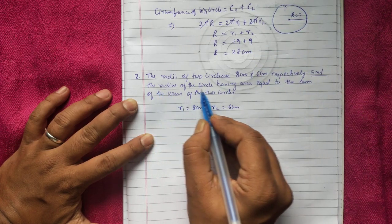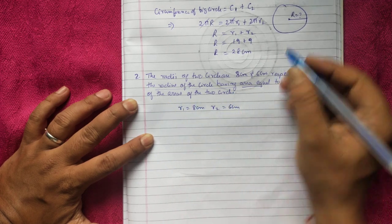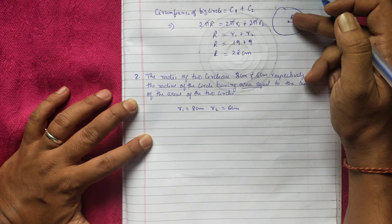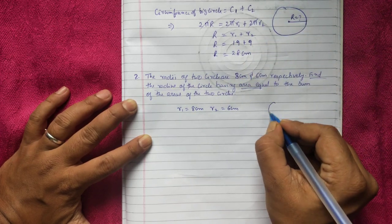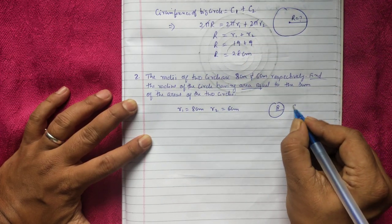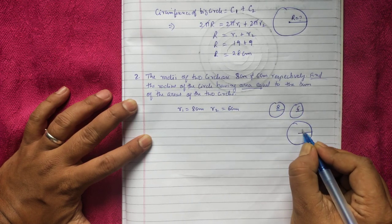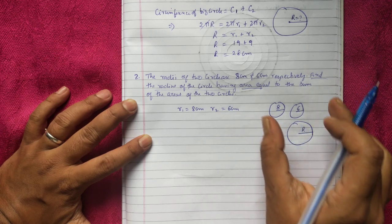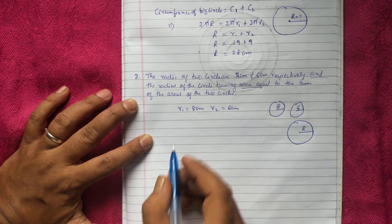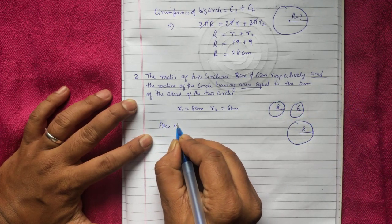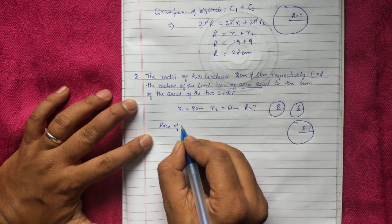The condition here is that the area of the big circle is equal to the sum of the areas of the other two circles. Suppose one circle is of radius 8 and the other is of radius 6. These two are combined and you are going to find the radius R of the big circle, where the area of the big circle equals the sum of the areas of the two smaller circles.